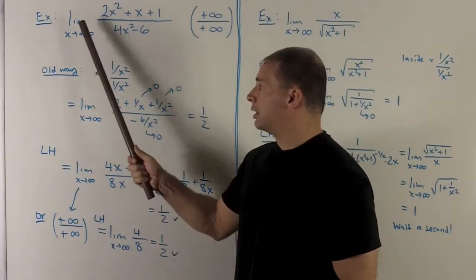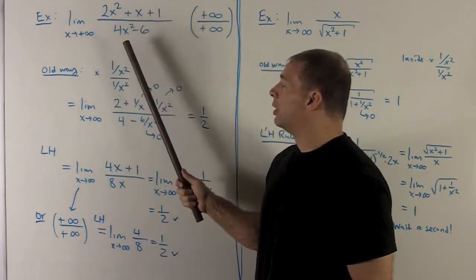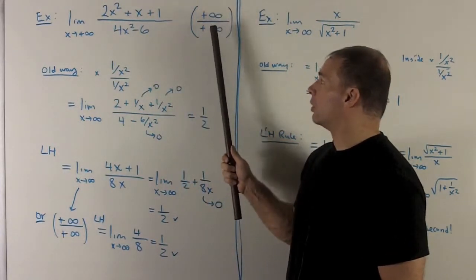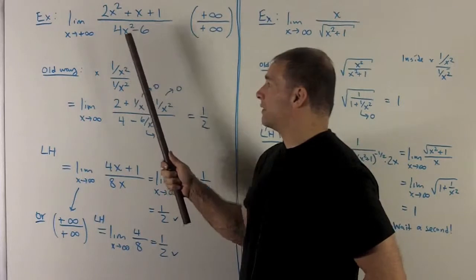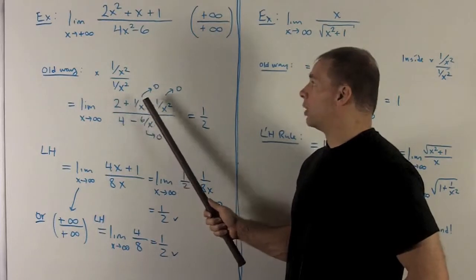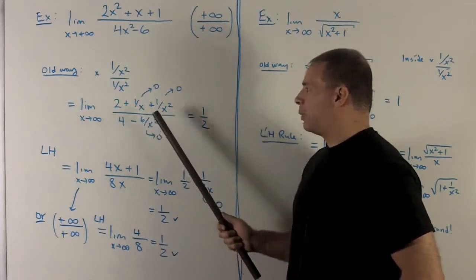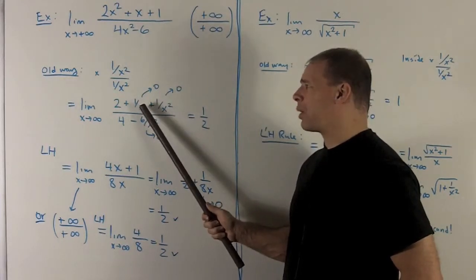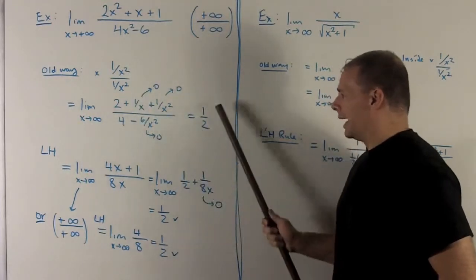For another example, consider limit going x to infinity, 2x squared plus x plus 1 over 4x squared minus 6. So that's going to be infinite over infinite, so it's an indeterminate form. The old way we would do this is just to divide the top and bottom by x squared. That reduces the top to 2 plus 1 over x plus 1 over x squared over 4 minus 6 over x squared. And then we note, as we go out to infinity, anything over a power of x, positive power of x, is just going to go off to 0. So we lose all of our terms except the 2 and the 4, and I get a half.